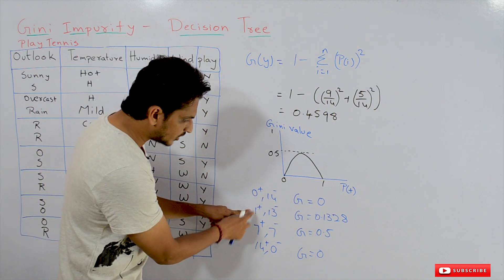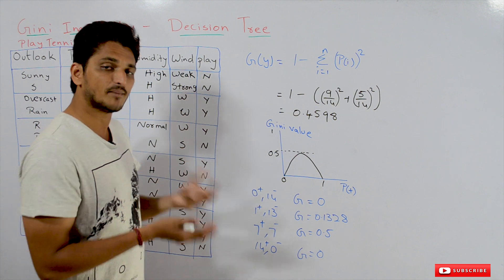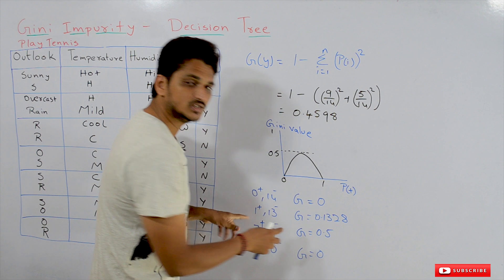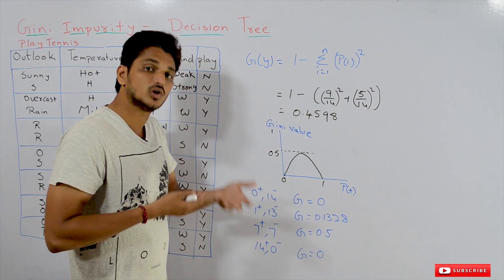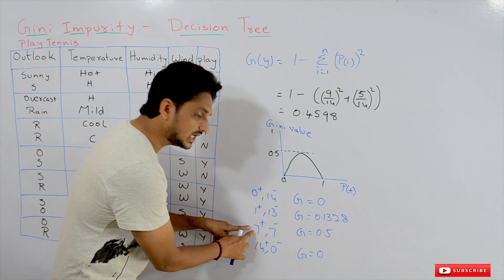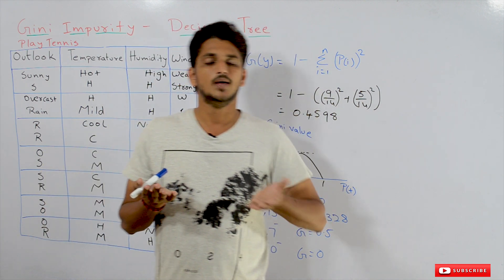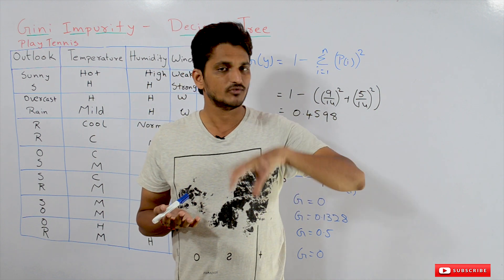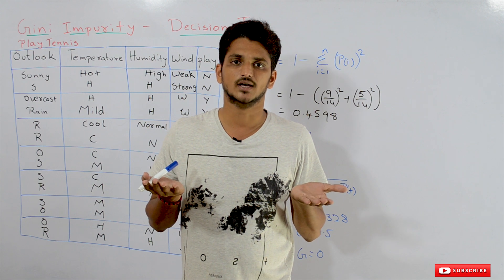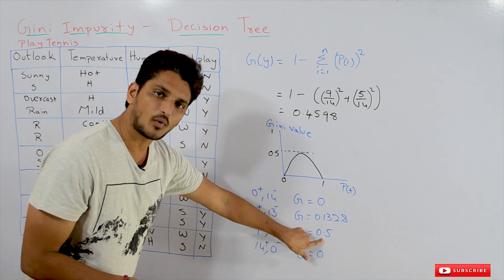In the same way, if you have 1 positive point and 13 negative points — meaning we are increasing the positive points — the Gini impurity value increases. G becomes 0.1328. So Gini impurity value increases with the increase in positive data points. When will we get the maximum Gini impurity value? If you are having an equal number — 7 positive and 7 negative data points — the Gini impurity value will be maximum at 0.5.